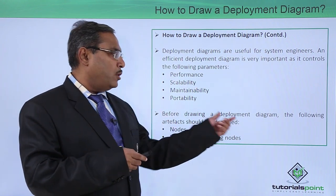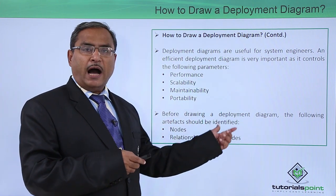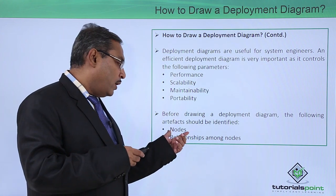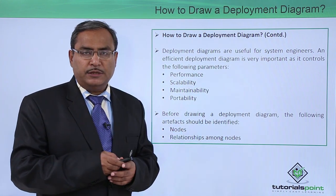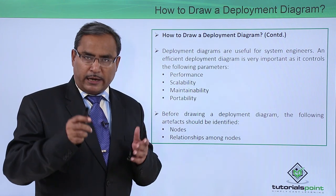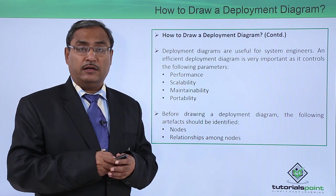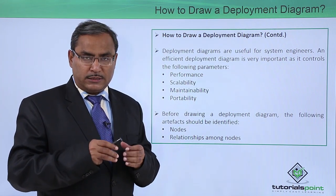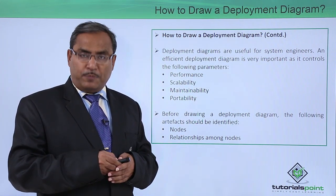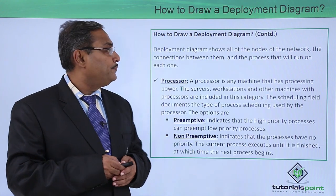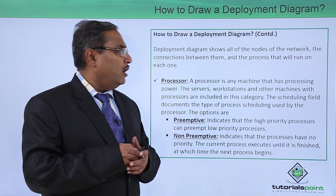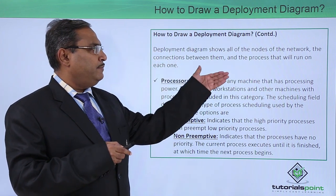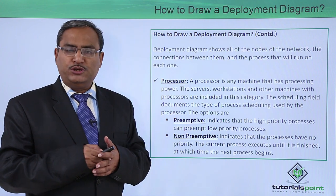Before drawing a deployment diagram, the following artifacts should be identified. The artifacts required are: the nodes, the relationships among nodes, the relative connectivities, and the mode of connectivity. All these relationships between nodes will be known to us before going for the deployment diagram implementation. The deployment diagram shows all nodes of the network, the connections between them, and the processes that will run on each one.